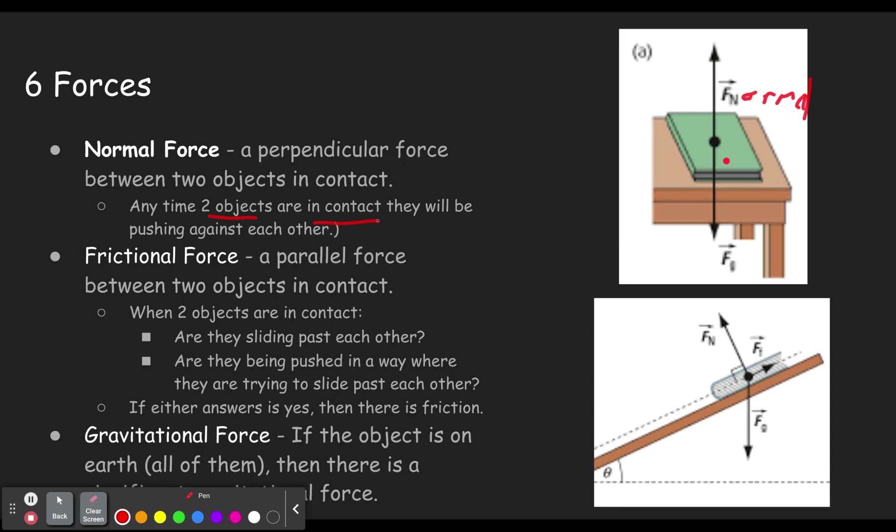Next kind of force is frictional force, which is another force between two objects in contact. Only this time it is a parallel force. So the first example here does not have a frictional force because this book is not moving or attempting to move sideways.